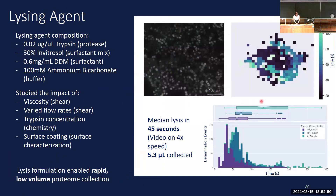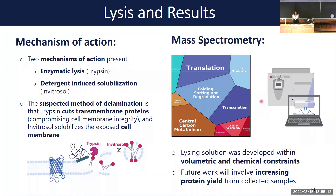The solution that worked best was a protease surfactant mix. Once developed, we studied the impact of viscosity, flow rates, trypsin concentration, and surface coating on cell delamination. We developed a solution capable of lysing around 100 cells in under 5.3 microliters. We identified that enzymatic lysis was the more dominant process, as it cuts transmembrane proteins before the surfactants solubilize and pop the cell. We've recently started running collected lysates through a mass spectrometer and getting some protein readouts, though protein yield is still low. Future work will involve increasing protein yield and validating what we're collecting. Come see me at poster 12 if you have questions.